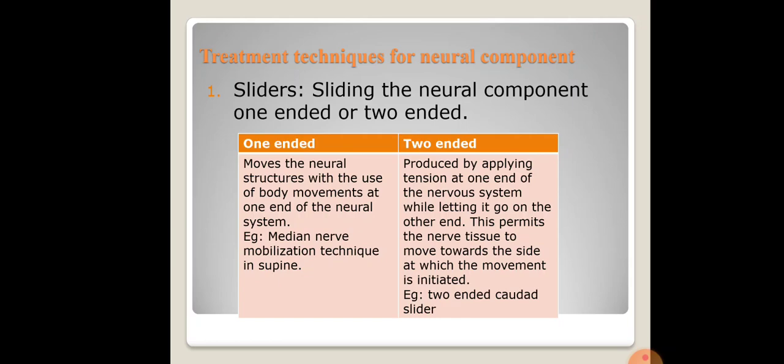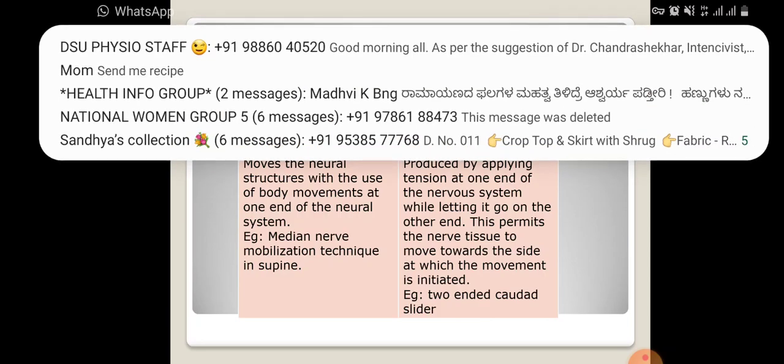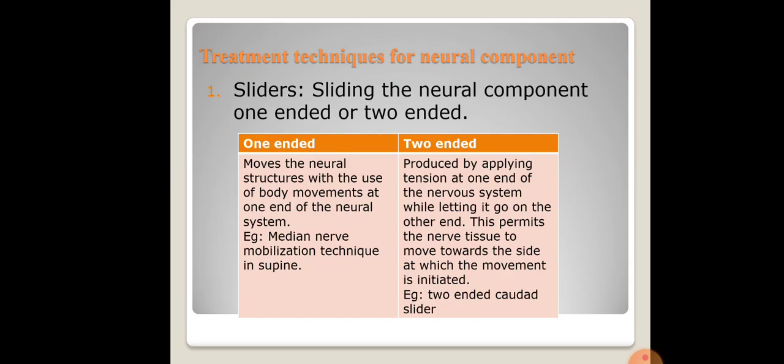Two-ended sliding is produced by applying tension at one end of the nervous system while letting it go on the other end, focusing on both ends — both the cervical and the wrist. The technique: position the patient in supine, take the upper extremity into abduction, hold the wrist into extension, place the neck into contralateral side flexion and keep it there. Then continuously move the wrist — stretch the nerve at the wrist, release, stretch, release. This is your two-ended sliding technique.